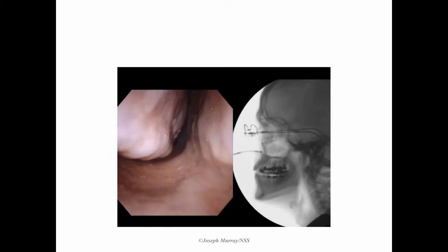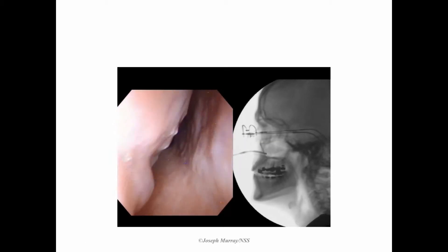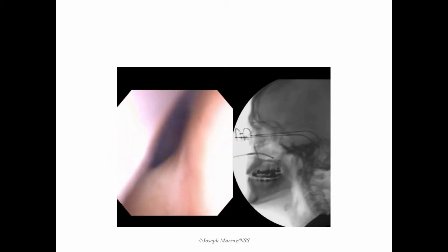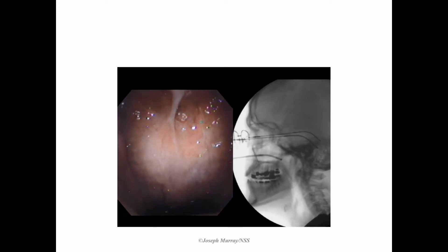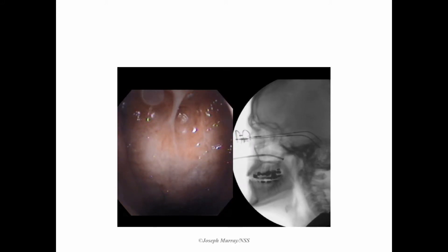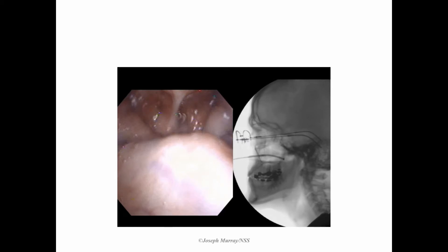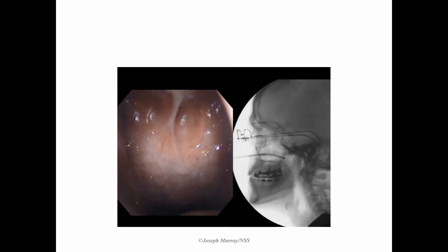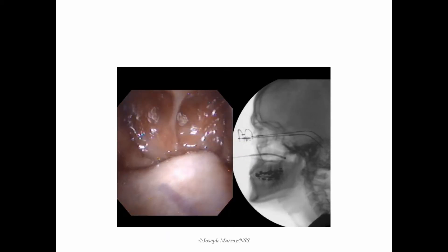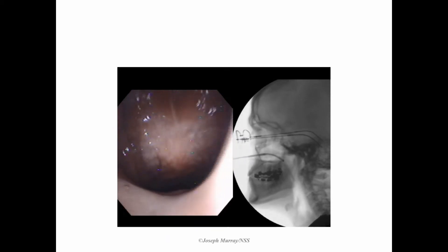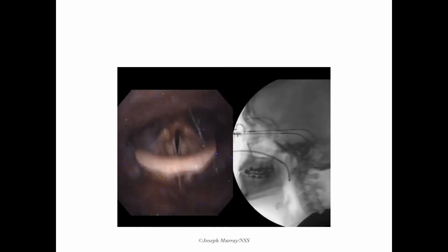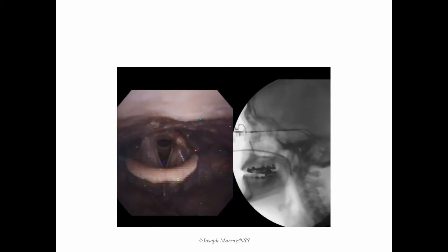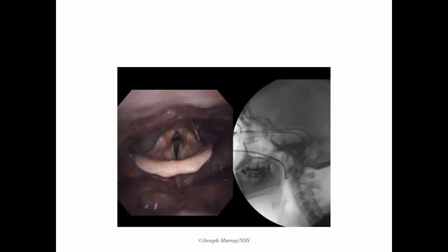Again, we've identified our path, we're advancing the scope back, we find our first landmark, and we observe a few swallows here. As we advance towards the posterior wall, the tip of the scope is angulated down to view the hypopharynx.